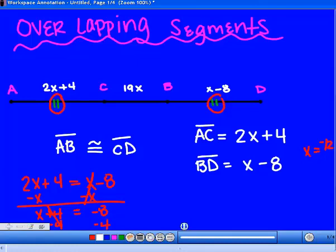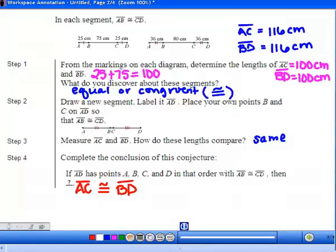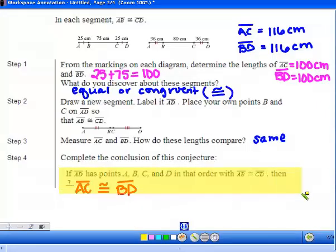You may be given algebraic expressions and have to solve them, but it's the same concept. This is the main rule you're supposed to take away: if you have two overlapping line segments and AB is congruent to CD, then the overlapping portions will be equal as well. That's it. Make sure you study for your quiz next class.